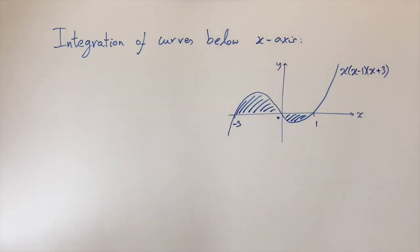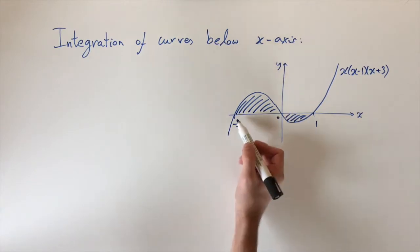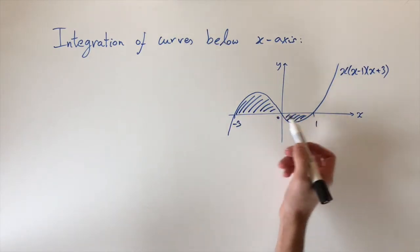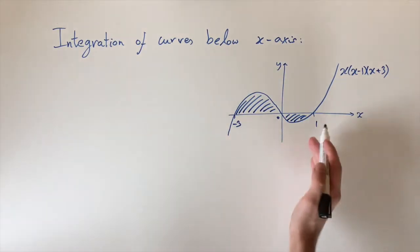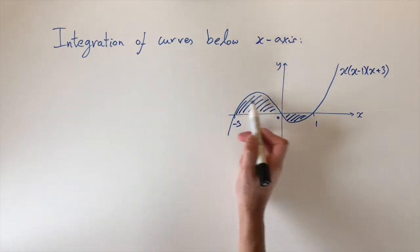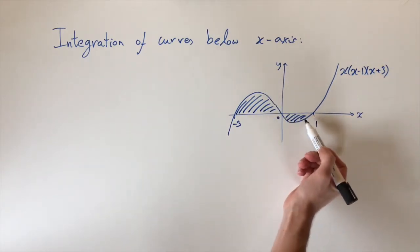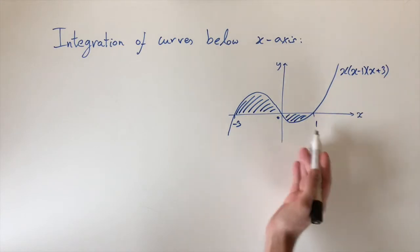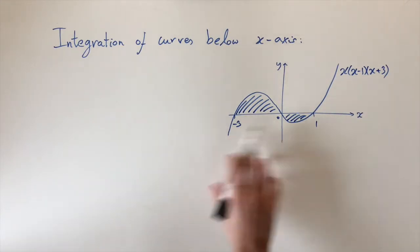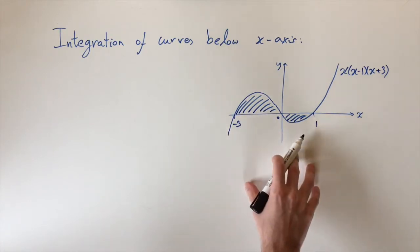Okay, so now we're looking at a much trickier example because we have this function that's above the x-axis here between minus 3 and 0, and below the axis between 0 and 1. So if you were to integrate between minus 3 and 1, well this region would give us a positive number because it's above the x-axis. This region would give us a negative number because it's below the x-axis. So if we do this all at the same time, these answers are going to cancel slightly and we're going to get an answer that's completely wrong. It's not going to correspond to the area of this function.